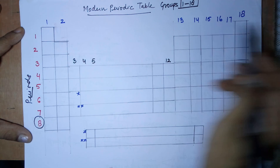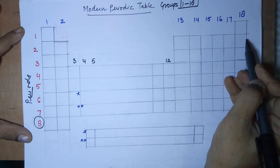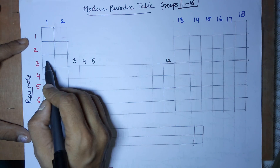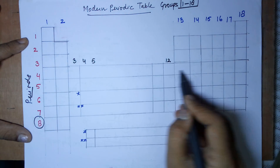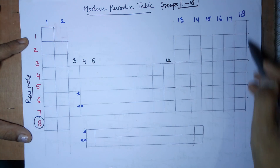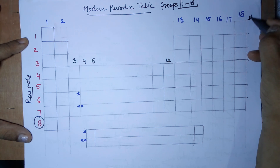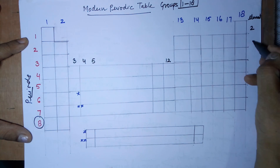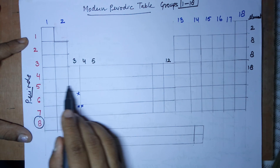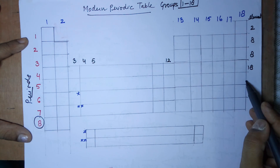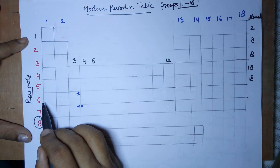The first period has only two elements, so it is a short period. The second period has eight elements, and the third period also has eight elements. The fourth period has all elements from group 1 to group 18, giving 18 elements. The fifth period similarly has 18 members.